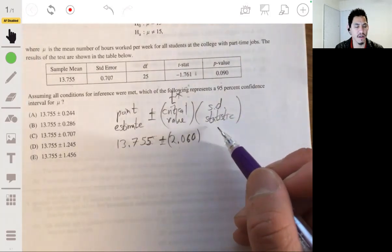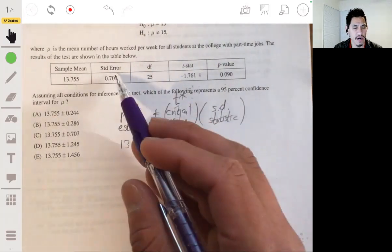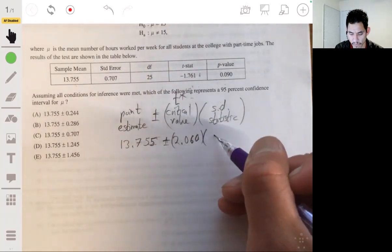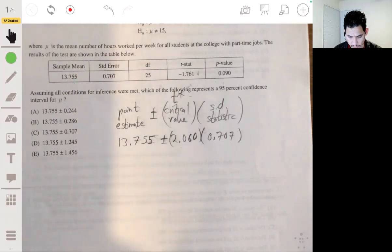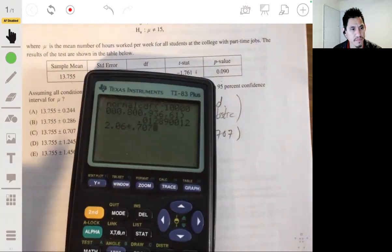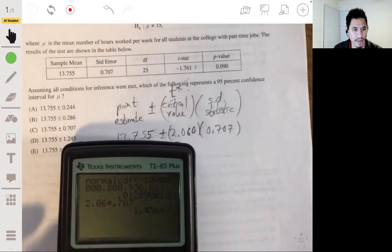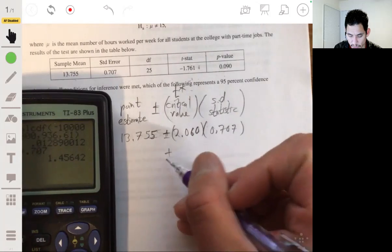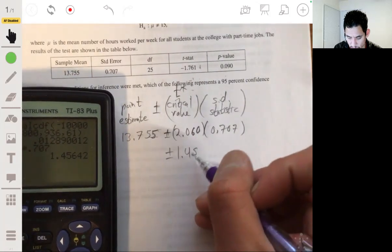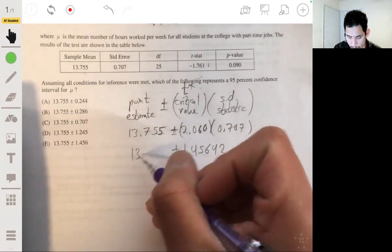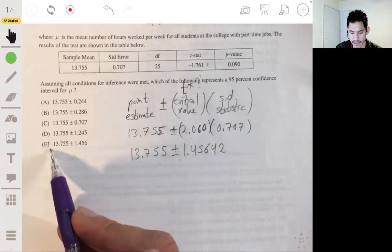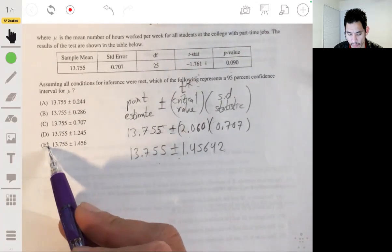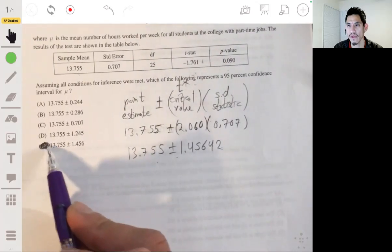And the standard deviation of the statistic will be our standard error. It's already calculated here, 0.707. And so then let's just multiply that out. See what that is. And that'll be 1.45642. And so then our answer, you can see, is going to be E, given in this form. Thank you.